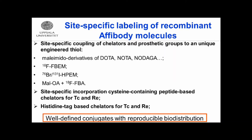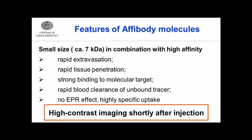In summary, this gives us tracers with rapid extravasation, rapid tissue penetration, and tumor localization — within half an hour we are reaching maximum. Binding to the molecular target is strong, while unbound tracer is cleared rapidly, providing very high contrast shortly after injection. Importantly, there is no EPR effect, which has been discussed earlier during today's session, so the accumulation of affibody molecules is highly specific.